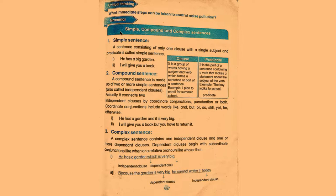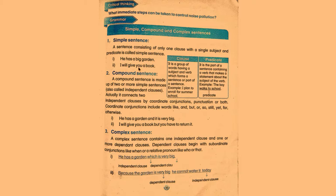Now we come to grammar. We will learn simple, compound, and complex sentences. First of all, a simple sentence: a sentence consisting of only one clause with a single subject and predicate is called a simple sentence. There are two examples: number one is 'He has a big garden,' and the second one is 'I will give you a book.'